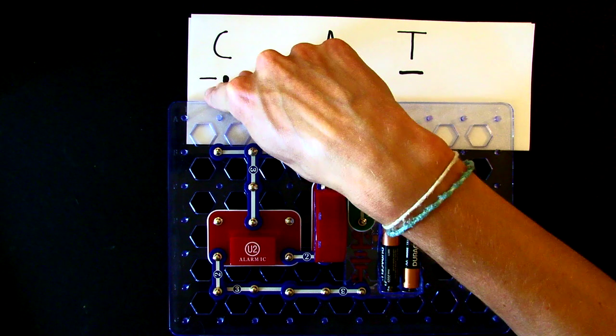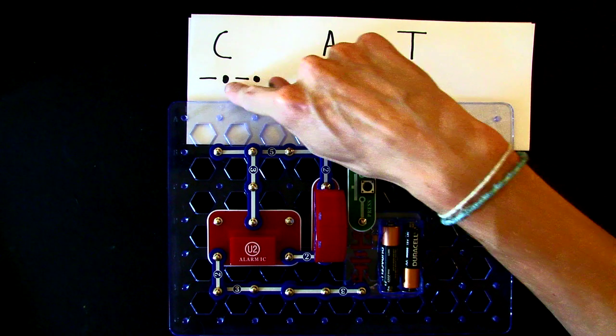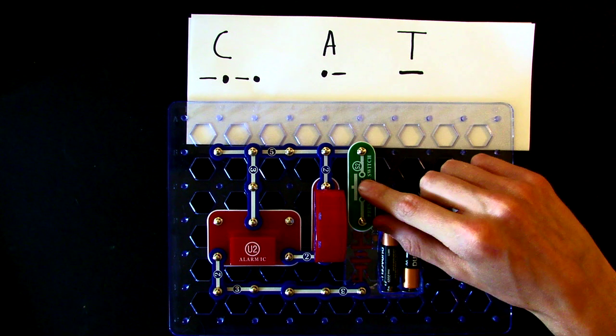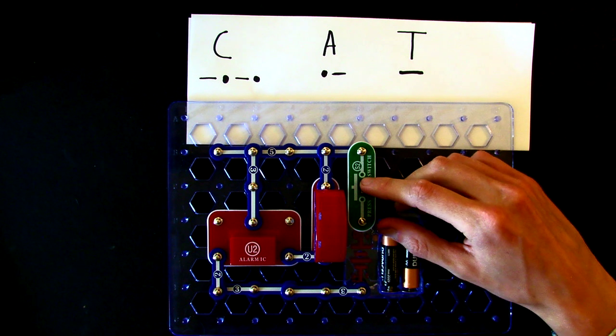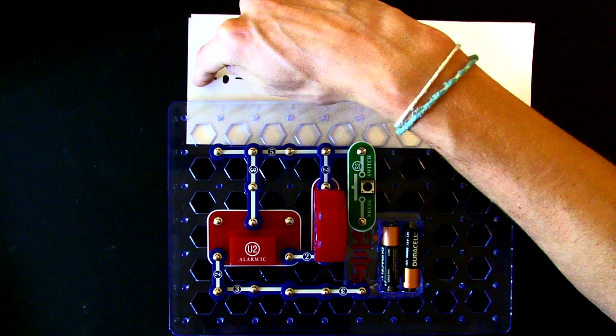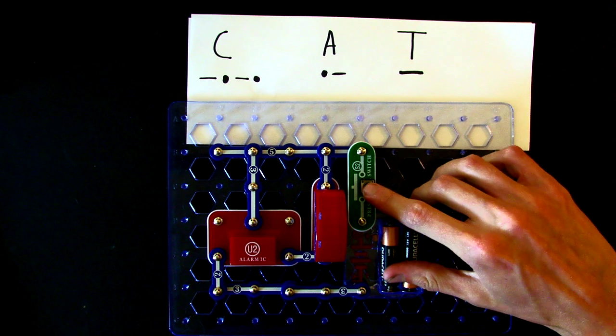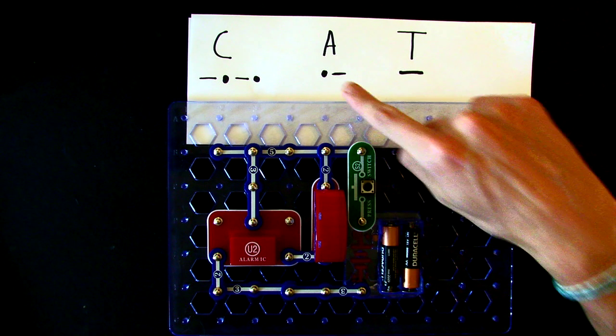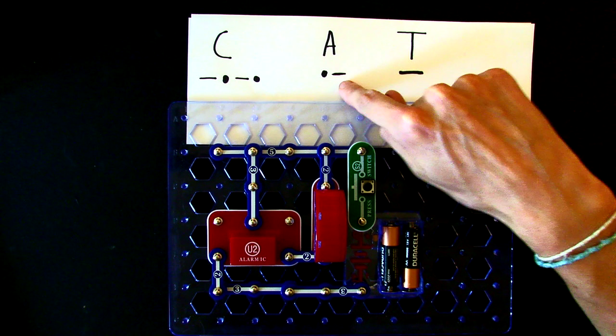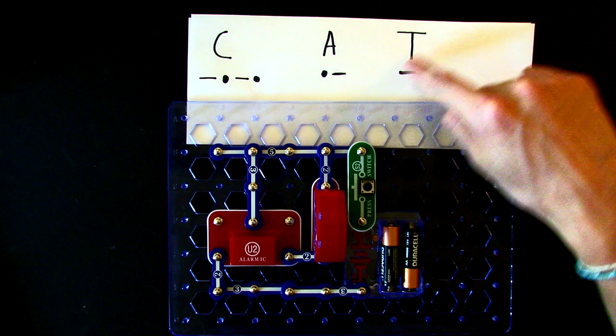The long dashes, I'll hold down the note for a long time. The dots, I'll hold down for a short time. So let's spell the word cat. First, I'll make the letter C. It's dash, dot, dash, dot. A, dot, dash, and T. It's a dash. So in total, you have...